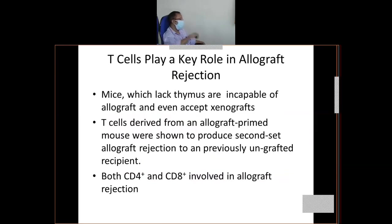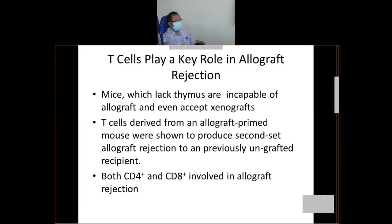In the allograft rejection, who are the major key players? The major key player is the T cell. This can be evidenced by mice that lack the thymus — meaning there is no maturation of T lymphocytes. Those mice can accept the allograft very easily, and even accept the xenograft from other species.